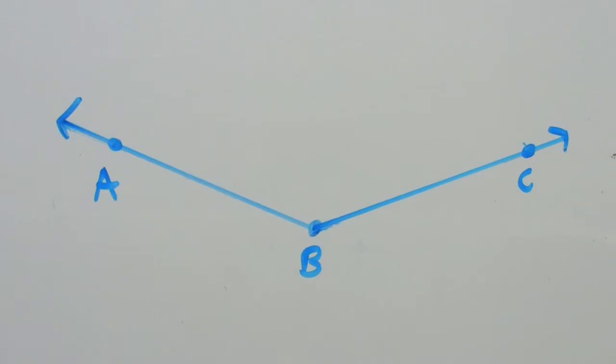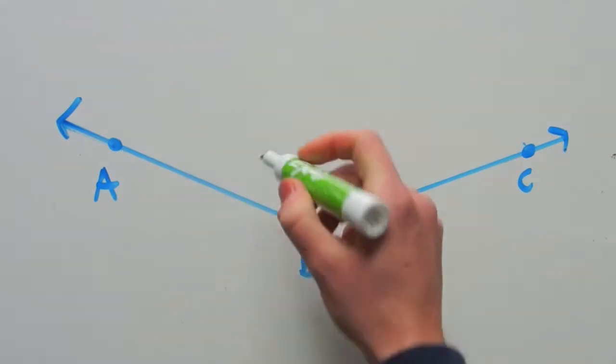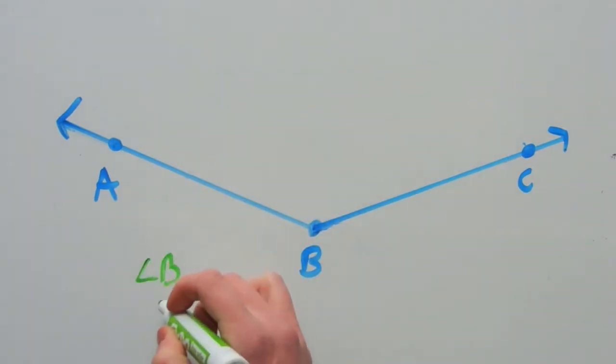The angle we're trying to measure is this angle B, otherwise known as angle ABC, or angle CBA.